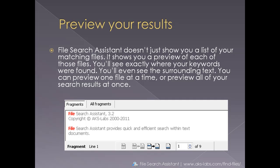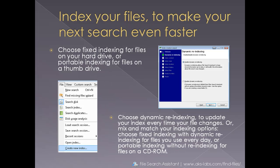You can preview one file at a time, or preview all of your search results at once. File Search Assistant also includes several additional features. Index your files to make your next search even faster. Choose Fixed Indexing for files on your hard drive, or Portable Indexing for files on a thumb drive. Choose Dynamic Reindexing to update your index every time your file changes.